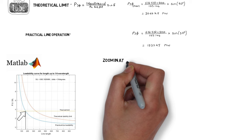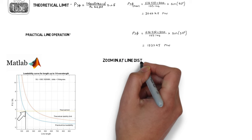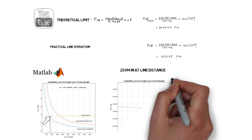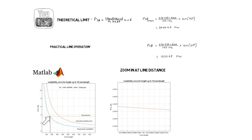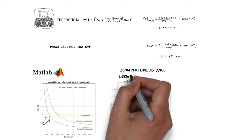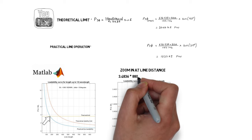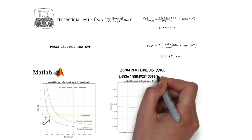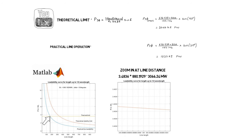To verify the exact values for the theoretical limit I will zoom in at the distance of the line. In this example a line length of 350 kilometers was used. This is equal to 3.4836 times the SIL and is equal to 3066.24 megawatts.